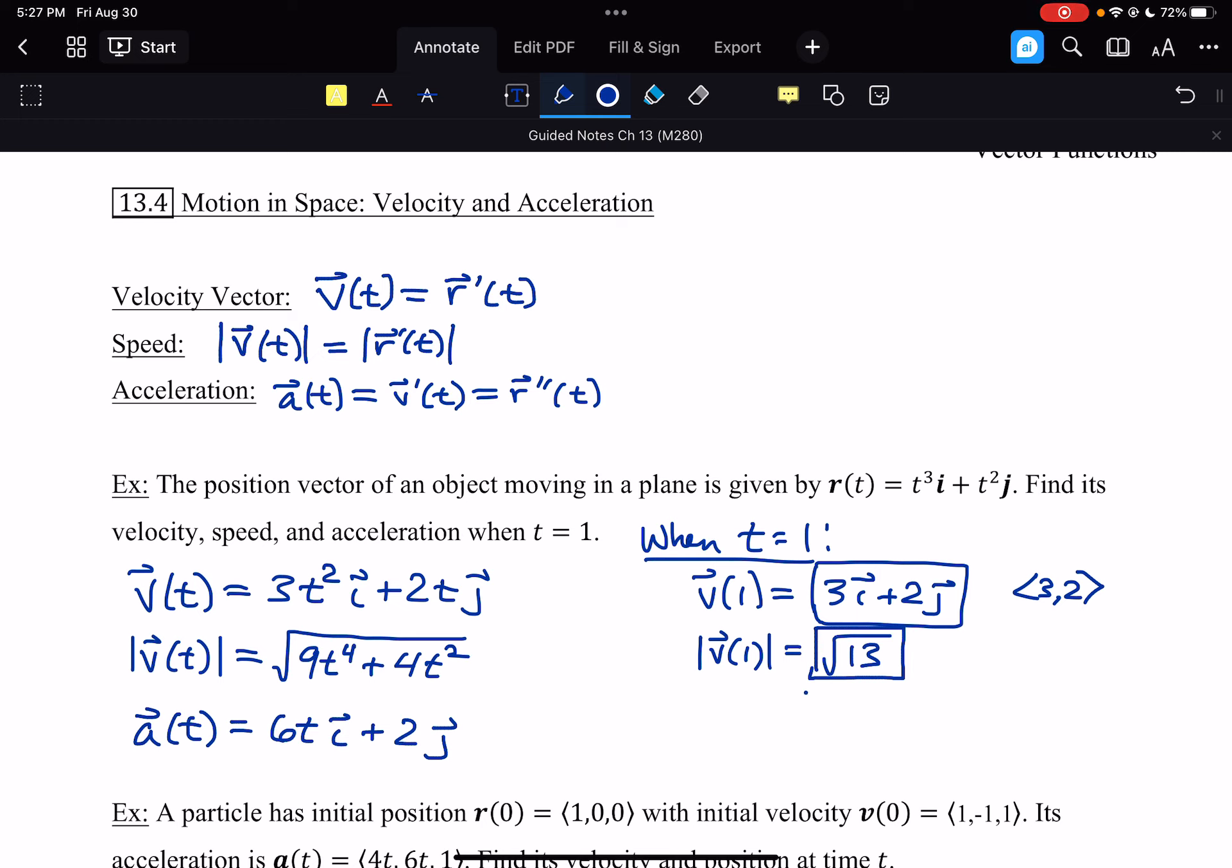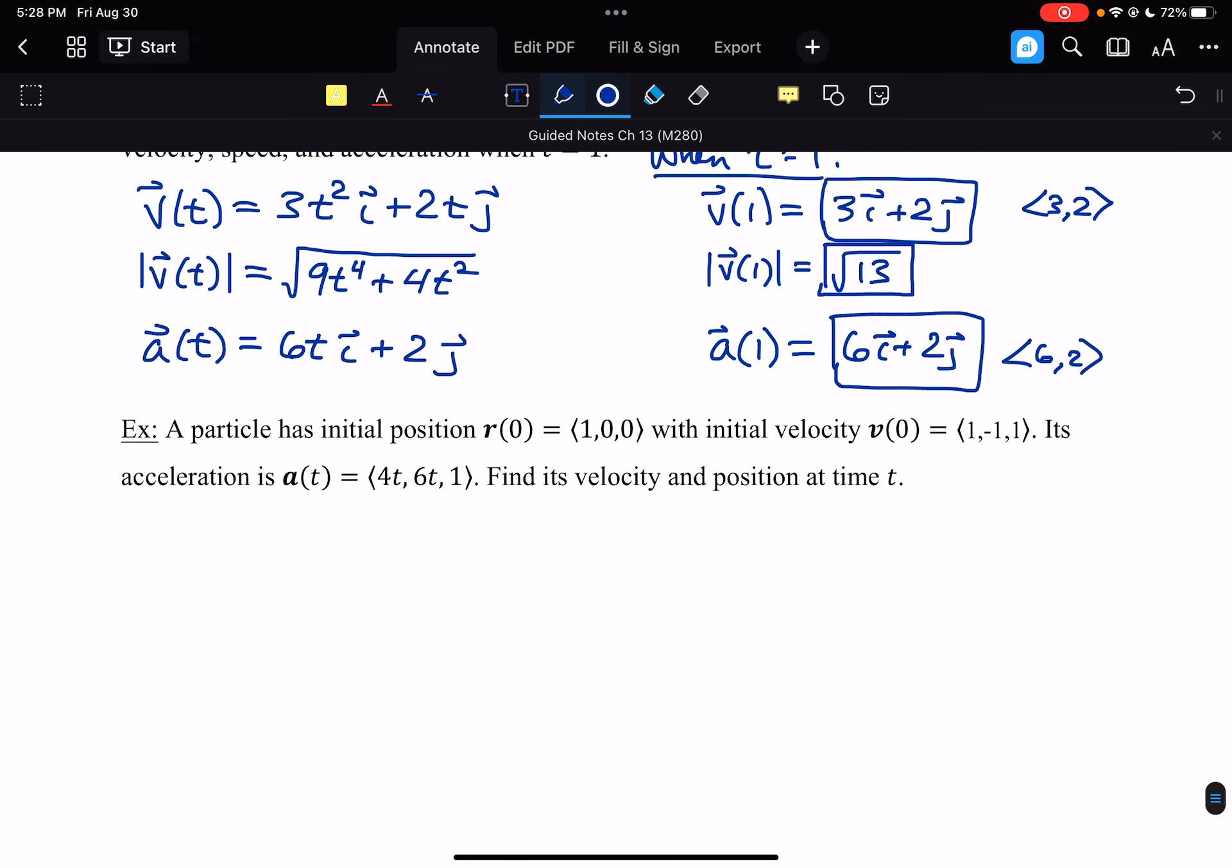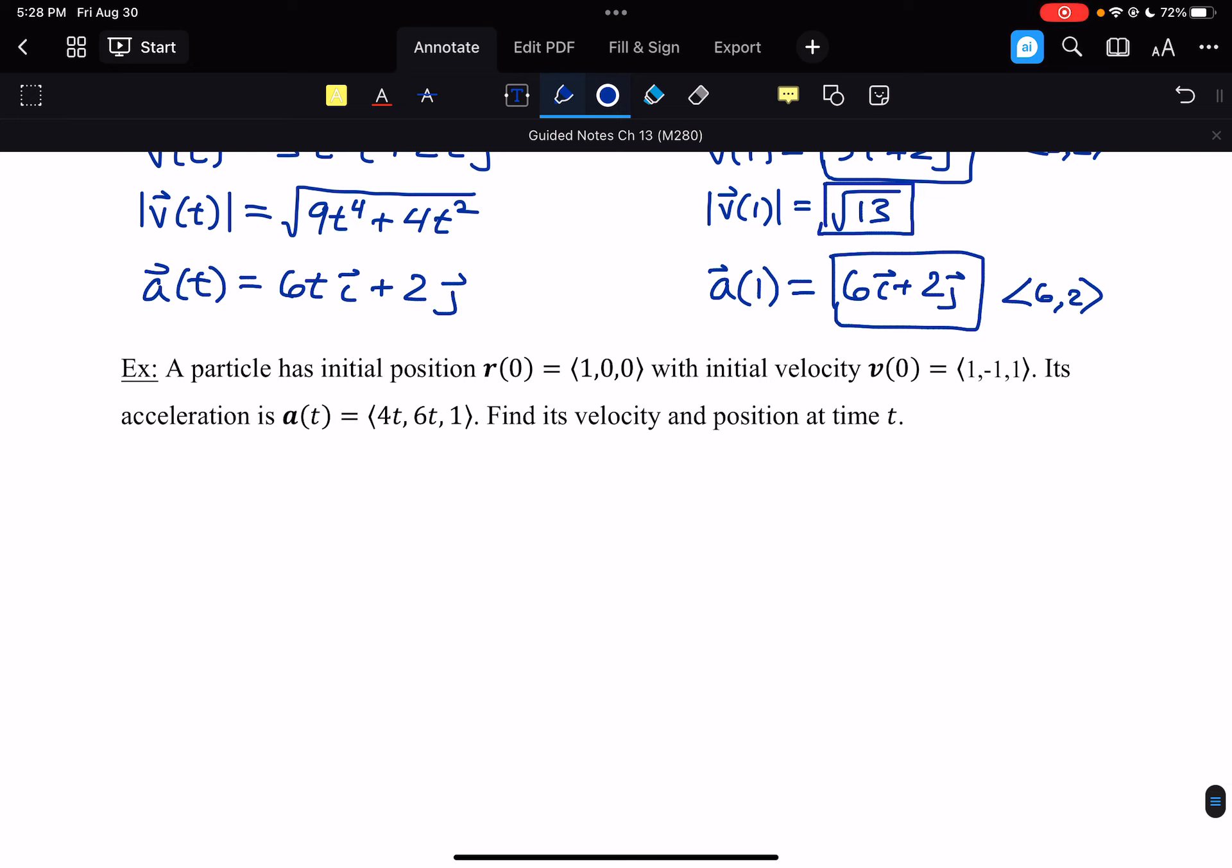We use derivatives when given the position to find velocity and acceleration. We can also go back the other direction, though. If we know the velocity or acceleration, we can use those to backtrack and find the position. So a particle has initial position r(0) = (1,0,0) with initial velocity v(0), and this one I think might still have a typo on yours. This is supposed to be (1,-1,1). If yours isn't this, please just scratch it out and write (1,-1,1) for that vector.